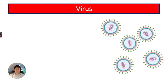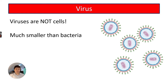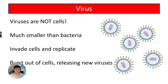The first pathogen type is the virus. Viruses are not cells — they're much smaller than bacteria. They invade cells, replicate inside them, and then burst out of cells, releasing new viruses.